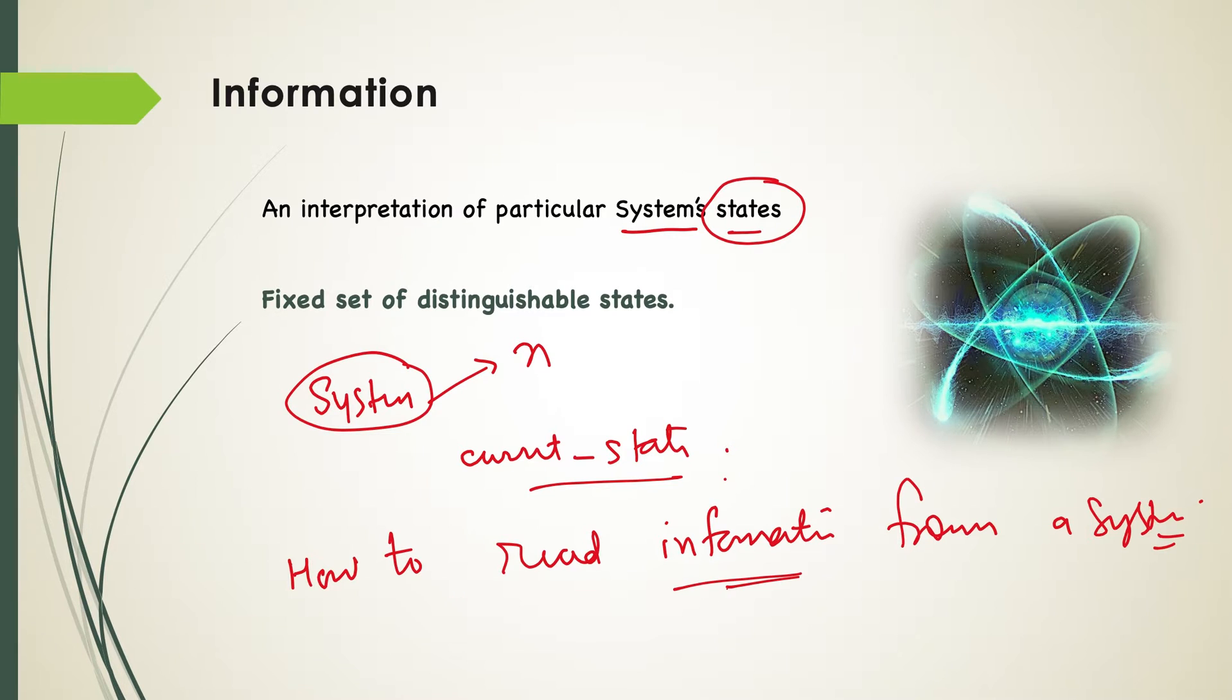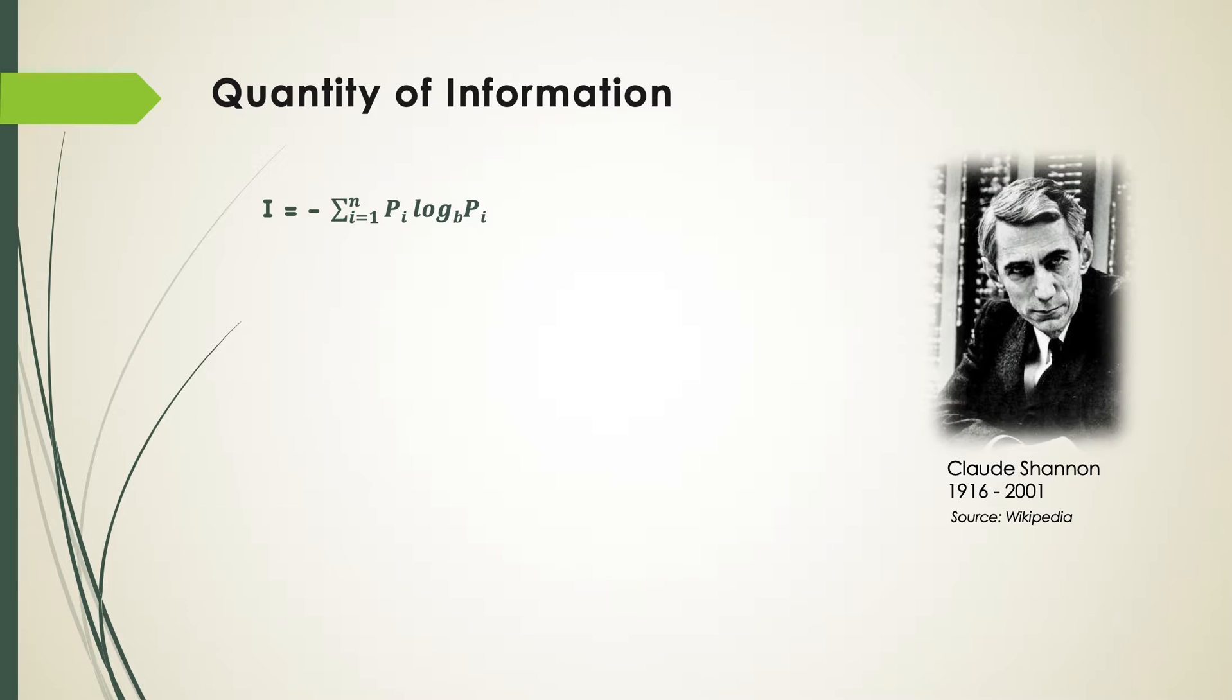The first mathematical model, the first mathematical notion of quantity of information was introduced in 1948 by an American mathematician, Shannon. And he quantized information as this formula, the Shannon formula, which is minus